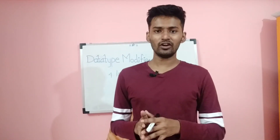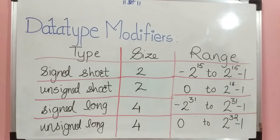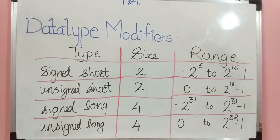Combining all the data type modifiers: signed short gives a size of 2 bytes and a range from minus 2 raised to 15 to 2 raised to 15 minus 1; unsigned short gives 2 bytes with range 0 to 2 raised to 16 minus 1. For signed long, the size is 4 bytes with range minus 2 raised to 31 to 2 raised to 31 minus 1; unsigned long gives 4 bytes with range 0 to 2 raised to 32 minus 1. We can apply these modifiers as needed to change the properties or behaviors of variables.